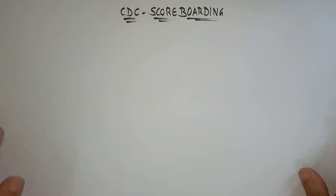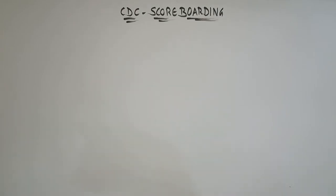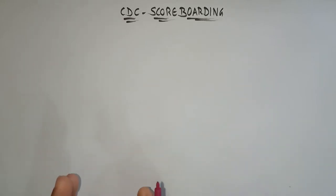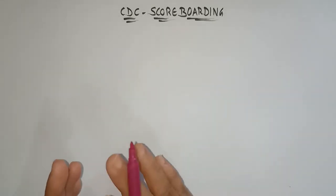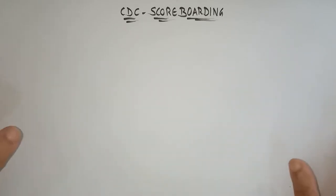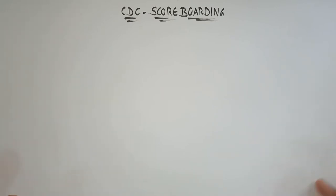Welcome back. Let's continue with the dynamic scheduling algorithm. In the previous video I explained about the Tomasulo's algorithm — the concept and an example. Now let's move on to another type of dynamic scheduling algorithm: scoreboarding. In this video I'll explain exactly what scoreboarding is, the processor structure, and the requirements. In the next video I'll take an example on scoreboarding.